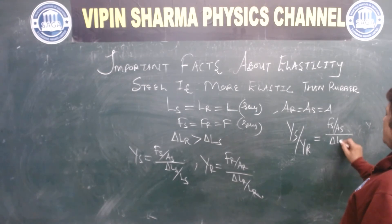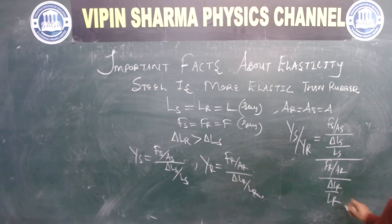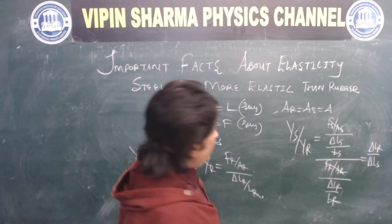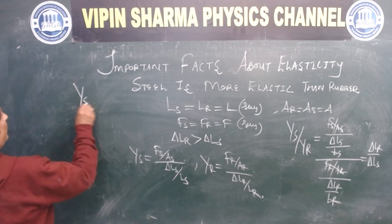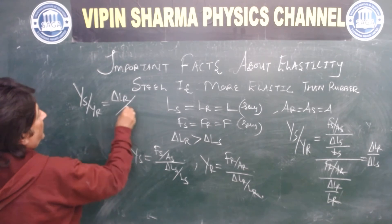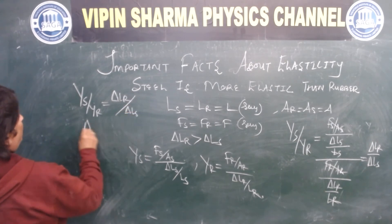yr is fr upon ar divided by delta lr upon lr. So this is equal to fr upon ar divided by delta lr upon lr. So this equals fr, as equal to fr, y cut, ls equal to lr we assumed.